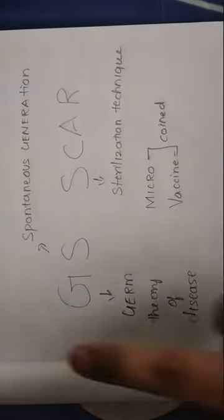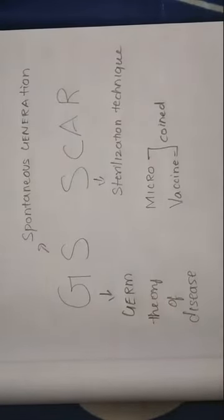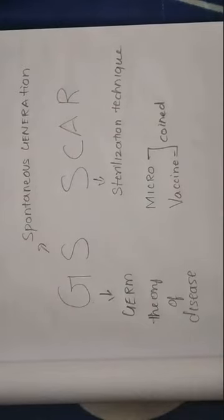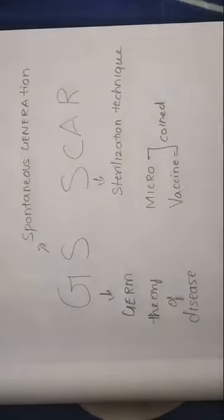In that, G stands for germ theory of disease. He was the one who proposed the germ theory of disease. S stands for spontaneous generation. He was the one who disapproved this theory, that is spontaneous generation.